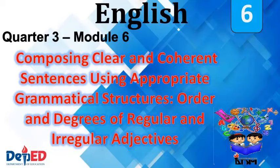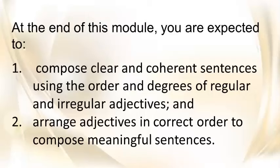English Grade 6, Quarter 3, Module 6: Composing clear and coherent sentences using appropriate grammatical structures — order and degrees of regular and irregular adjectives. At the end of this module you are expected to: one, compose clear and coherent sentences using the order and degrees of regular and irregular adjectives; and two, arrange adjectives in correct order to compose meaningful sentences.